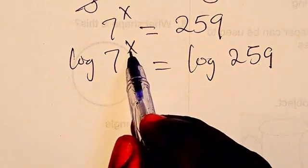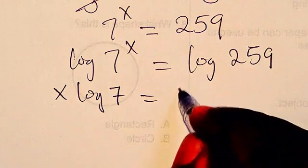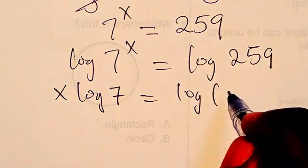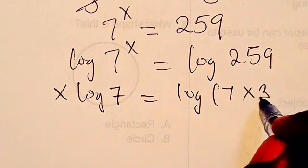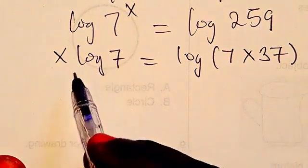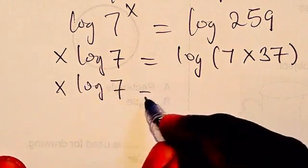So now from there, I'm going to be having this coming back here multiplying log 7 equals log. Now 259 can be factored as 7 times 37. Right, so from there we're going to see that we have x log 7 equals...